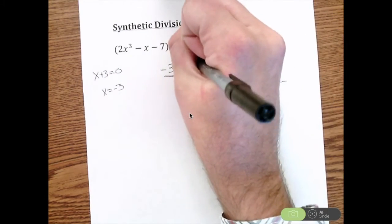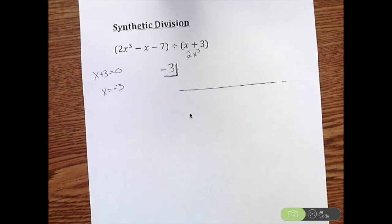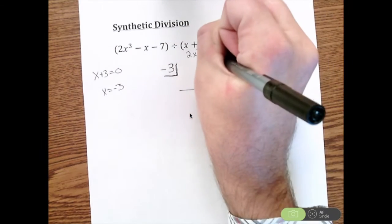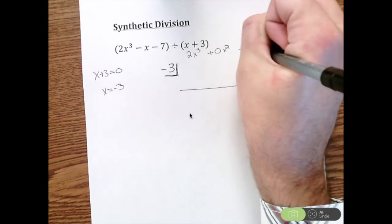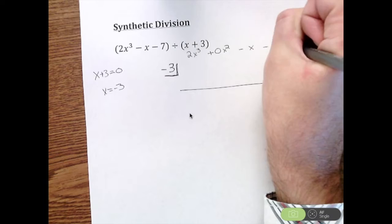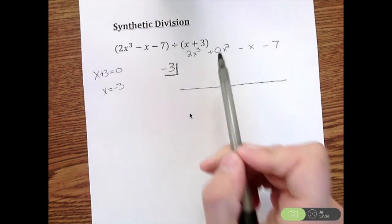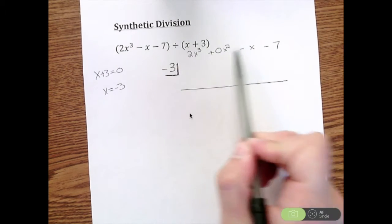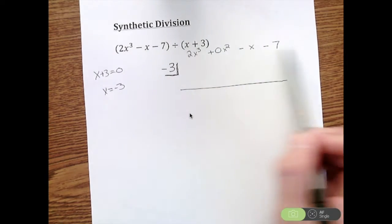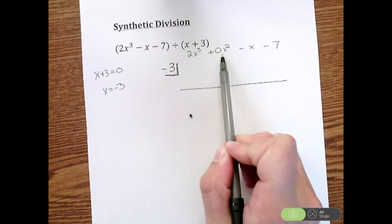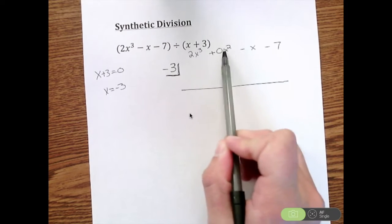I'm going to write out my complete polynomial including the x squared. So we have 2x cubed, and since I don't have an x squared, that's like 0x squared, minus x, minus 7. So I put it in standard form and show I have x cubed, x squared, x, and then my constant. I want to make sure I show all my terms. This is going to be very important. The most common mistake with synthetic division.